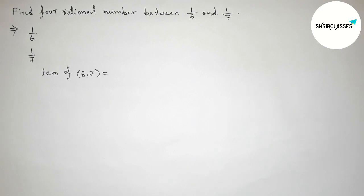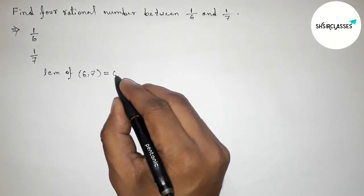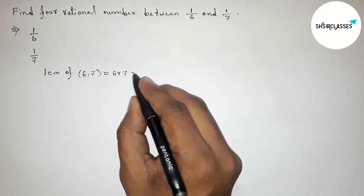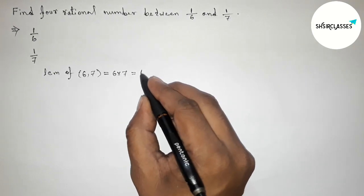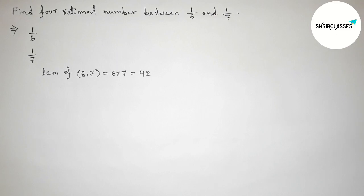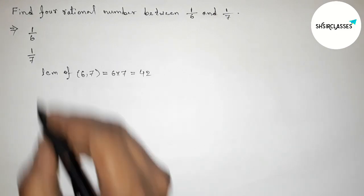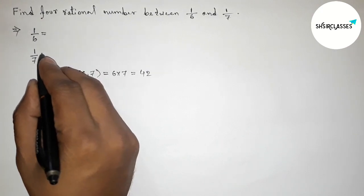So first of all, find LCM of 6 comma 7. 6 and 7 are prime to each other, so their LCM will be their product, so 6 into 7, so that is 42.